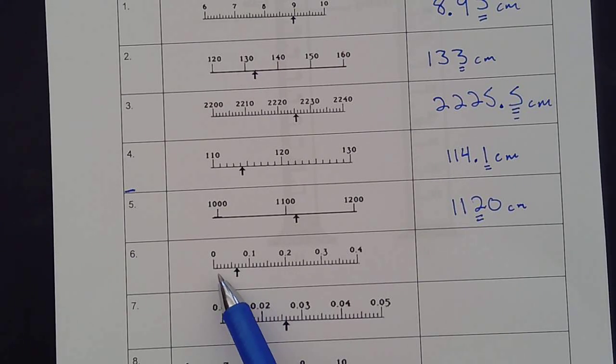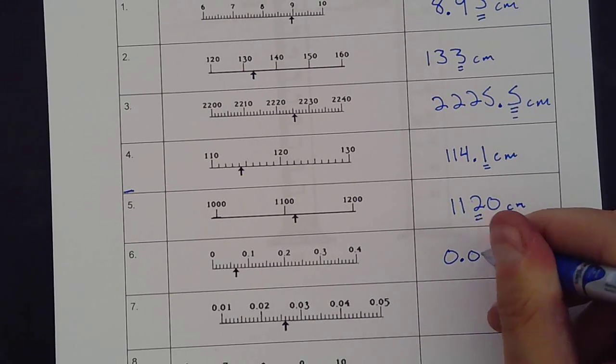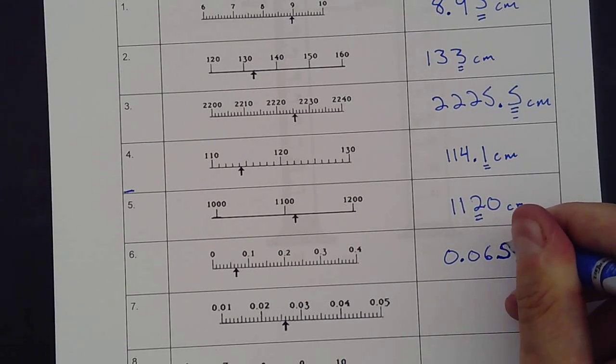Over here we have 0.1. So this is 0.01, 0.02, 0.05, 0.06. We have 0.06. I'm going to say that's right in the middle too, so 0.065.